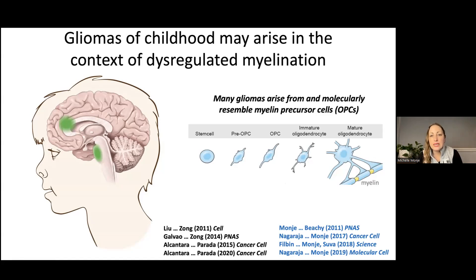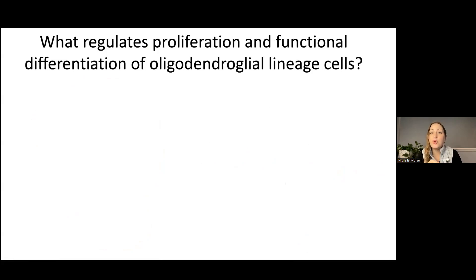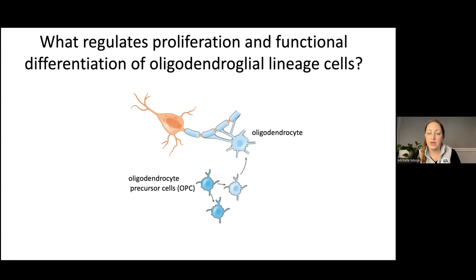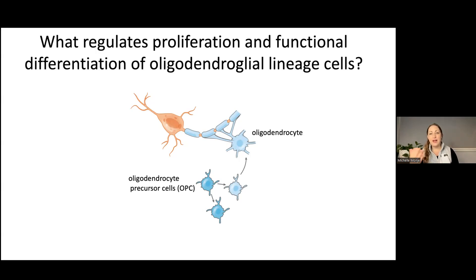We may glean really important lessons about gliomagenesis by better understanding what normally regulates gliogenesis. That begs a very basic question: what regulates an oligodendrocyte precursor cell — its proliferation and functional differentiation into myelin-forming glial cells? One hypothesis, in the literature since the early 1990s, first introduced by Ben Barres as a postdoctoral fellow with Martin Raff, is the idea that neurons themselves may regulate the extent to which their axons are myelinated, in an activity and experience-dependent manner.